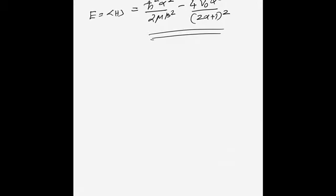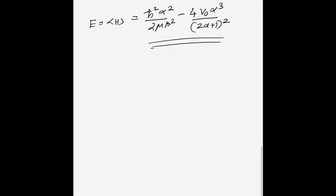To minimize E, we compute ∂E/∂α = 0. The first term differentiation is straightforward, while the second term requires the quotient rule.